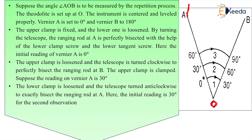To calculate angle AOB for set one, loosen the upper clamp screw — when the upper clamp screw is fixed, the readings are fixed. We loosen the upper clamp screw to calculate angle AOB. The upper clamp screw is loosened and we bisect the ranging rod at B by turning the telescope clockwise. This forms the first set of readings and the final angle of set one — suppose 30 degrees.